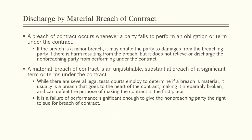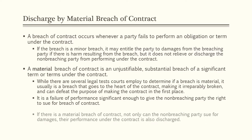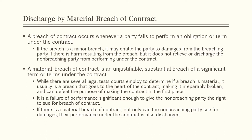A material breach is a failure of performance significant enough to give the non-breaching party the right to sue for breach of contract. If there is a material breach, not only can the non-breaching party sue for damages, but their performance under the contract is also discharged. So for a minor breach, you may get damages but still have to perform; for a material breach, you get damages and are excused from performance.